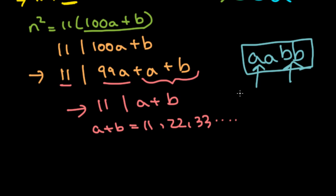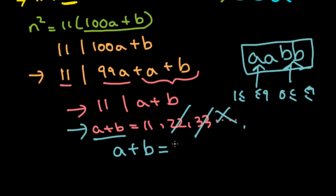So A can be between 1 and 9, and B can be between 0 and 9. So that means A plus B cannot be 22, it cannot be 33. Because, well, if it were 22, then A or B could be a two-digit number, and that's just not possible. So the only case we have to consider from this is that A plus B equals 11.